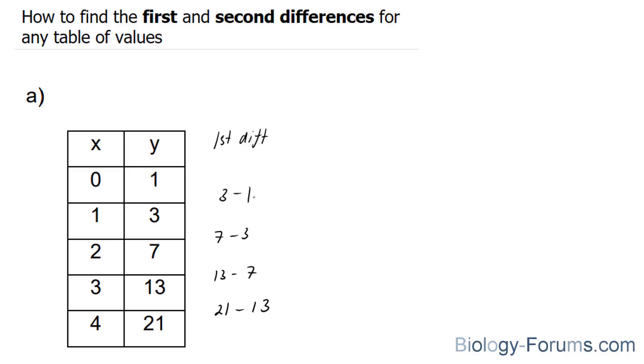So we're going to go ahead and subtract these. 3 minus 1 is 2. 7 minus 3 is 4. 13 minus 7 is 6. And 21 minus 13 is equal to 8.